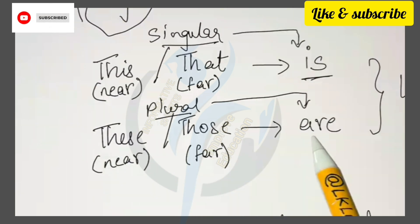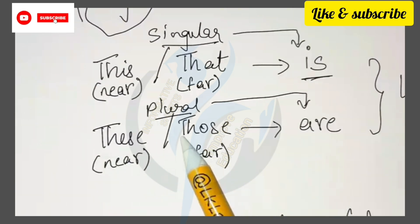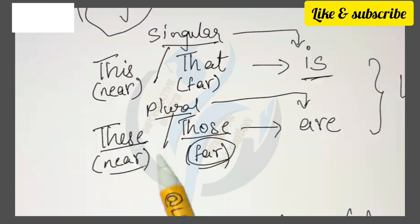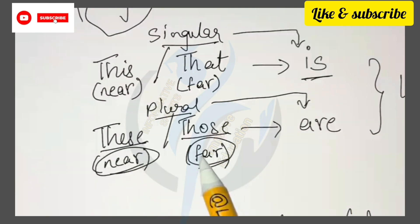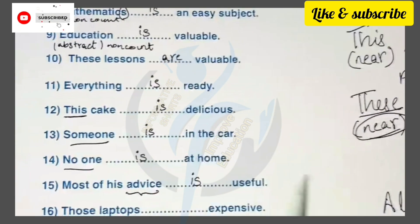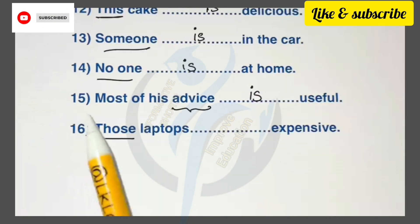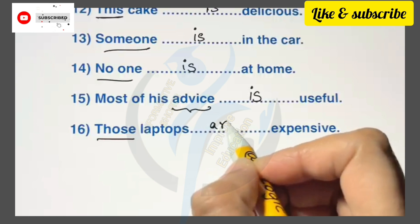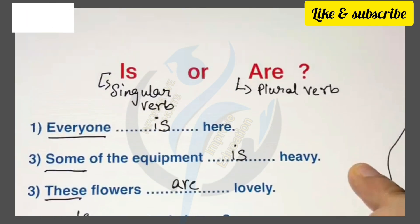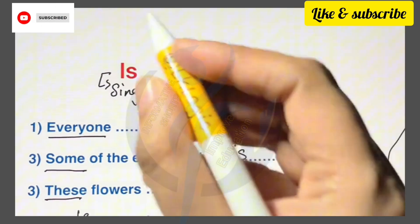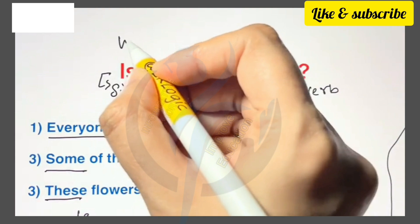No one is at home. 'Most of us advice blank useful.' Advice is an abstract noun — it is not a physical thing, so it is a non-countable noun. For non-countable nouns we use the singular verb 'is': Most of our advice is useful.